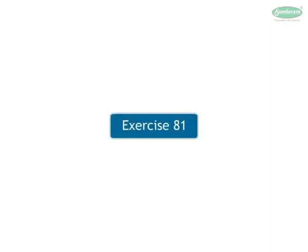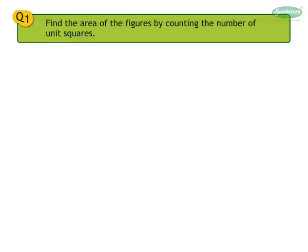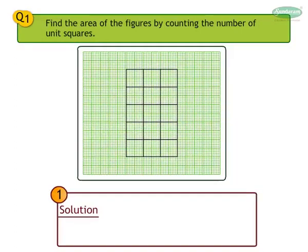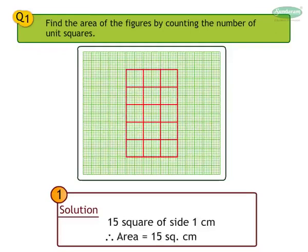Let us solve Exercise 8.1. Find the area of the figures by counting the number of unit squares. Number 1 solution: 15 squares of side 1 cm. Therefore, area is equal to 15 cm².